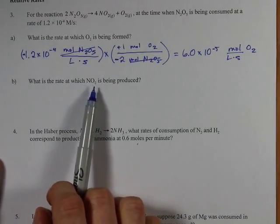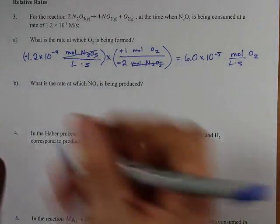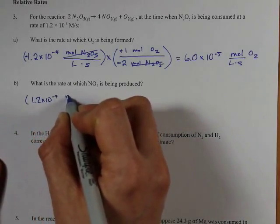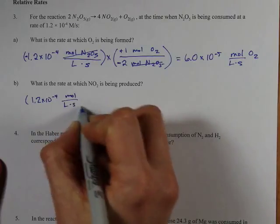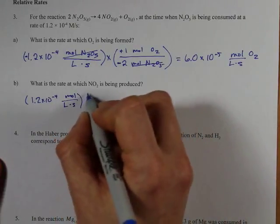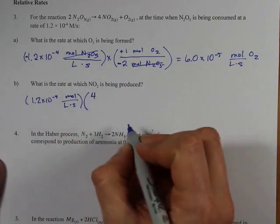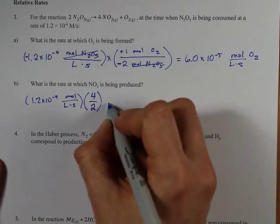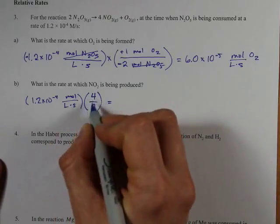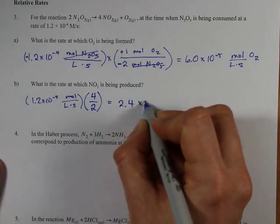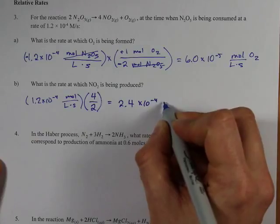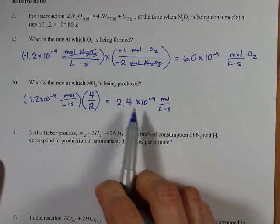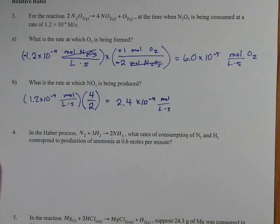At what rate is NO2 being produced? Well, we're going to do the exact same thing. That's 1.2 × 10^-4 moles per liter per second of N2O5, and we are producing 4 moles of NO2 for every 2 moles of N2O5. That times 4/2 gives me 2.4 × 10^-4 moles per liter per second. And we're done. That is also production because it's a product.